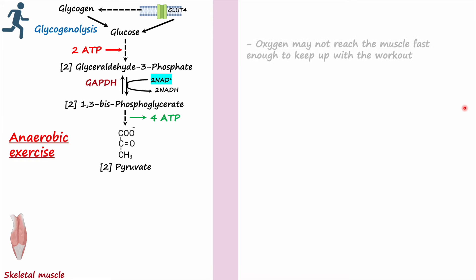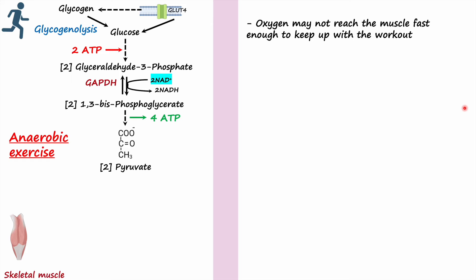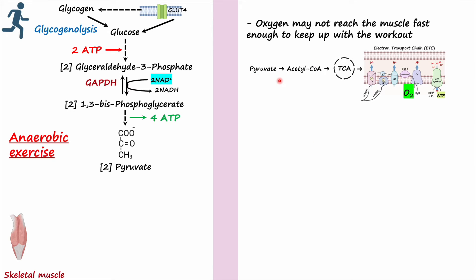During anaerobic exercise, oxygen may not reach muscle cells fast enough. Because there is not enough oxygen, the three stages of cellular respiration — pyruvate oxidation to acetyl-CoA, the TCA cycle, and the electron transport chain with oxidative phosphorylation — cannot take place, because the final electron acceptor, oxygen, is absent. It is specifically the last stage, oxidative phosphorylation, that directly uses oxygen; without it, the first two stages also cannot proceed.